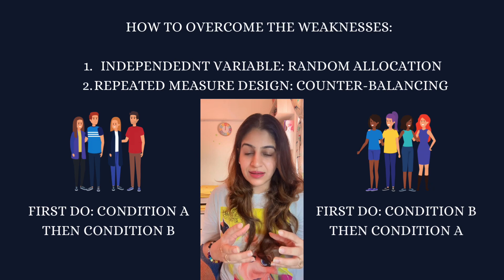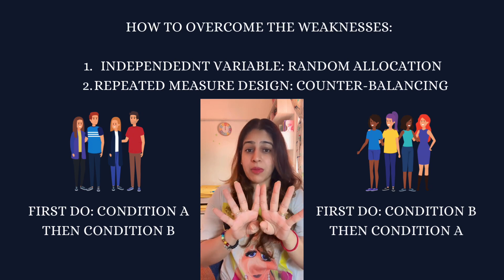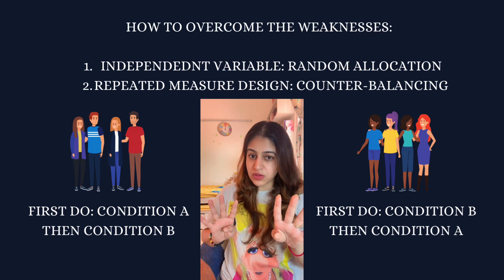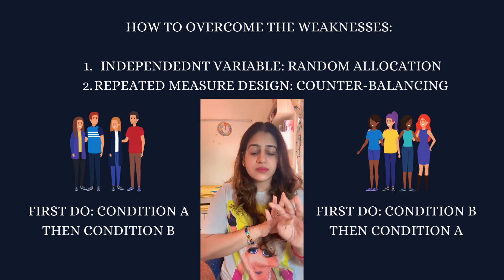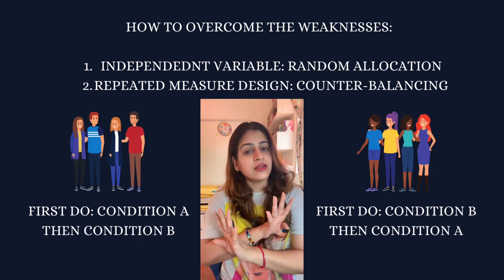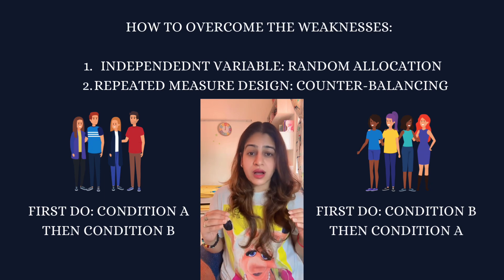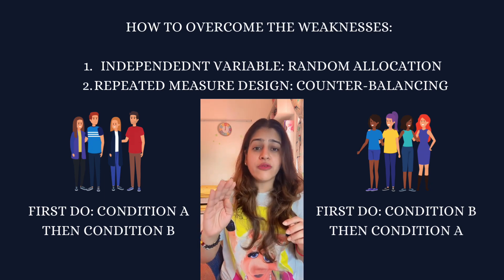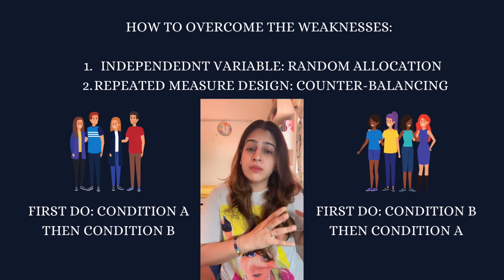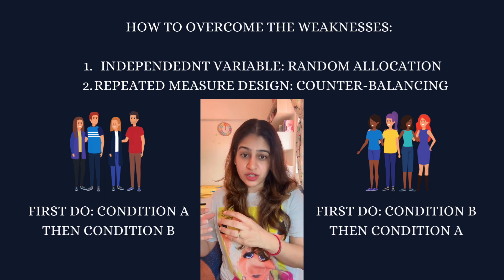The technique of overcoming this weakness is called counterbalancing. In counterbalancing, I have eight participants. I tell four of them to do task A first and then task B, and I tell the other four to do task B first and then task A. So all eight participants are doing both conditions, but half are doing condition A first then B, and the other half are doing condition B first then A.